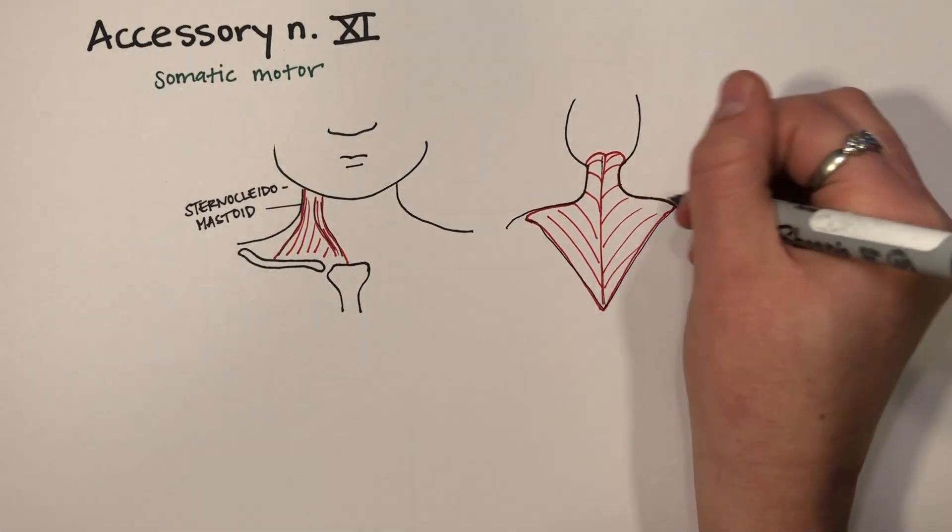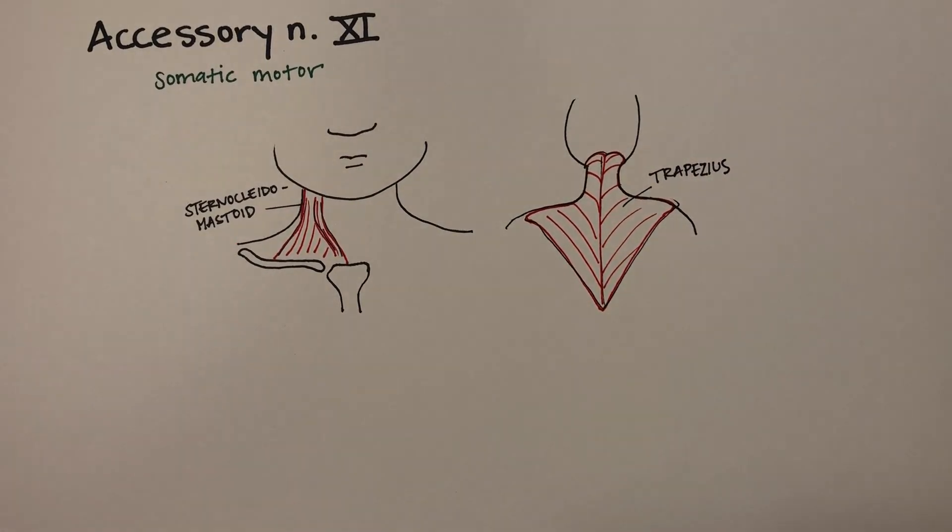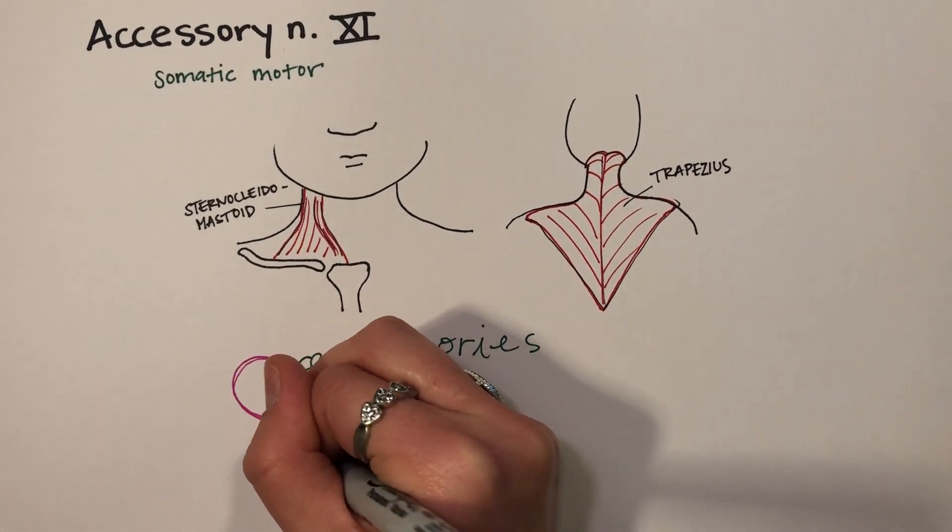I remember the name and innervation of this nerve with two accessories. First, a necklace. The sternocleidomastoid wraps the neck like a necklace.